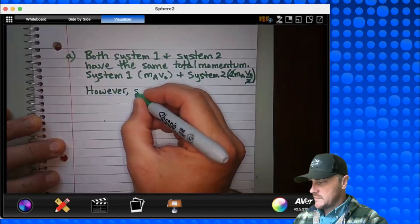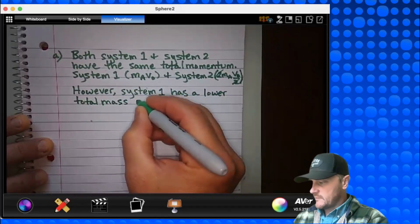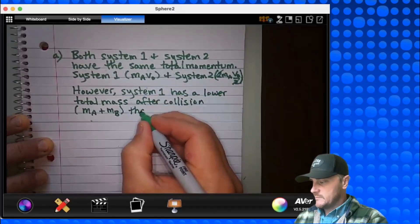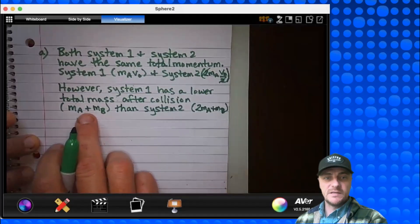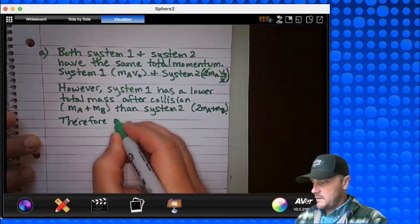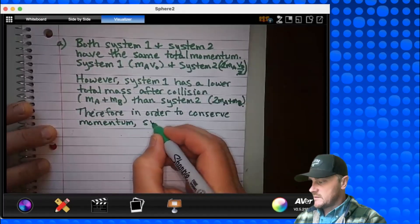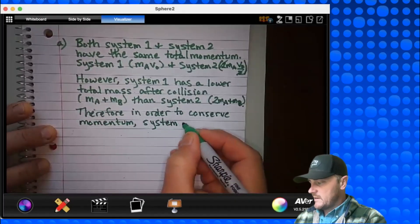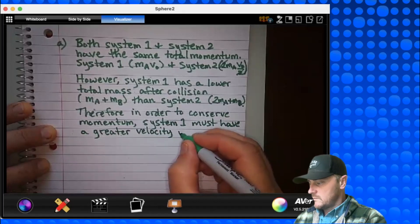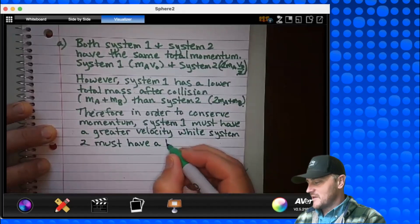However, system 1 has a lower total mass after collision than system 2. The reader clearly sees this is a lesser mass than this mass right here. Therefore, in order to conserve momentum, system 1 must have a greater velocity while system 2 must have a lesser velocity.